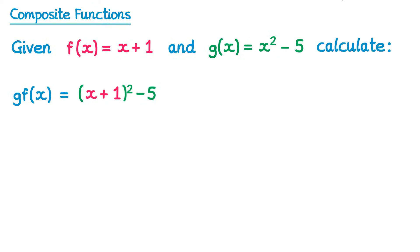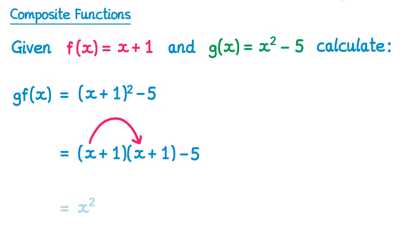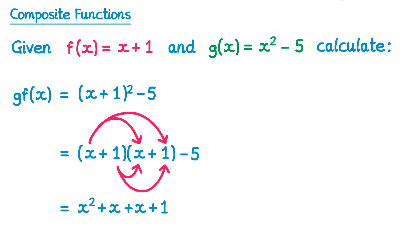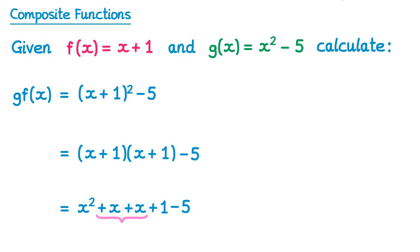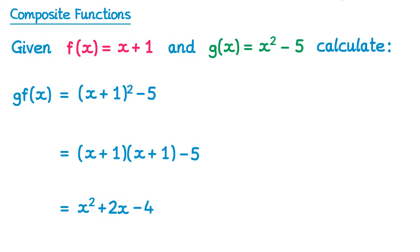We then just try and simplify this a bit. So x plus 1 all squared is just x plus 1 times another x plus 1 — don't forget the take away 5 at the end. We can expand this using FOIL: x times x is x squared, x times 1 is plus x, 1 times x is plus x, and 1 times 1 is plus 1 — and again don't forget that negative 5. We can simplify this because x plus x gives you 2x, and plus 1 take 5 gives you negative 4. So that's our answer.